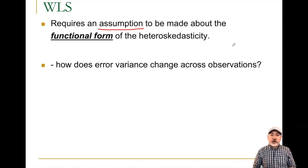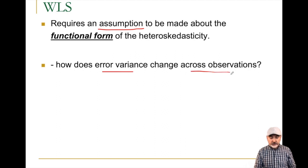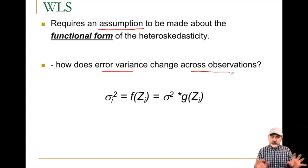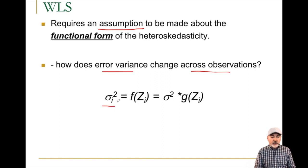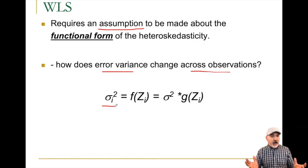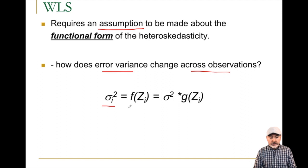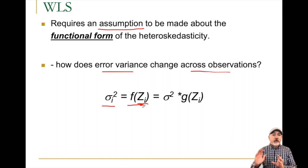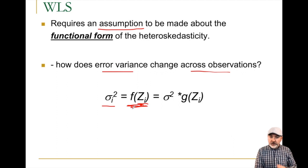If we can get close enough to the true form, we can actually make it work. The question we're trying to answer is: how does the error variance change across observations? When we see sigma-squared sub i, that's telling us we have heteroscedasticity — this differs from observation to observation. What we're saying now is this error variance is going to be a function of some variable z, so as z goes up and down, sigma-squared goes up and down across observations.